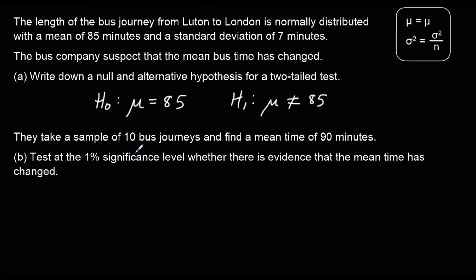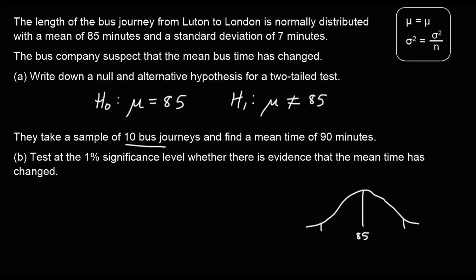We've got a sample of 10 bus journeys, so n is 10, and the mean of the sample is 90 minutes. We're going to test at the 1% significance level whether there's evidence the mean time has changed. We've got our mean of 85 in the middle, and since it's a two-tailed test we're looking at both ends — the most extreme 1% of data — which means we're going to have half a percent on each side.